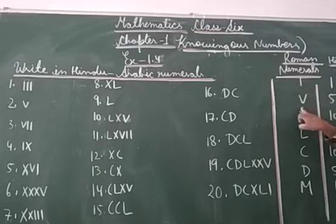So this is 1, this is 5, and this is 10. This is 50, and this is 100, and this is 500, and this is 1000.